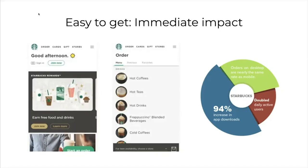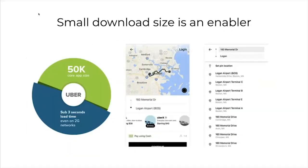Another example is from Uber. They've always had really well-made native mobile applications, but when they expanded to markets where networks were quite slow — as low as 2G — downloading that large mobile application became a barrier to entry. So they implemented a progressive web application where the download size was just 50 kilobytes, a small fraction compared to the native app, which allowed them to enter that market.